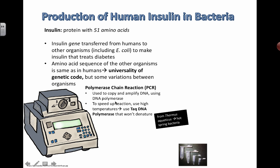DNA polymerase is the enzyme that normally makes copies of DNA. But if we want to really speed up production, we can use a special type called TAQ DNA polymerase. To speed up reactions, we use high temperatures — but high temperatures can cause regular enzymes to denature. TAQ DNA polymerase won't denature because it's derived from a type of bacteria found only in hot springs, so it's evolved to survive in super hot temperatures.